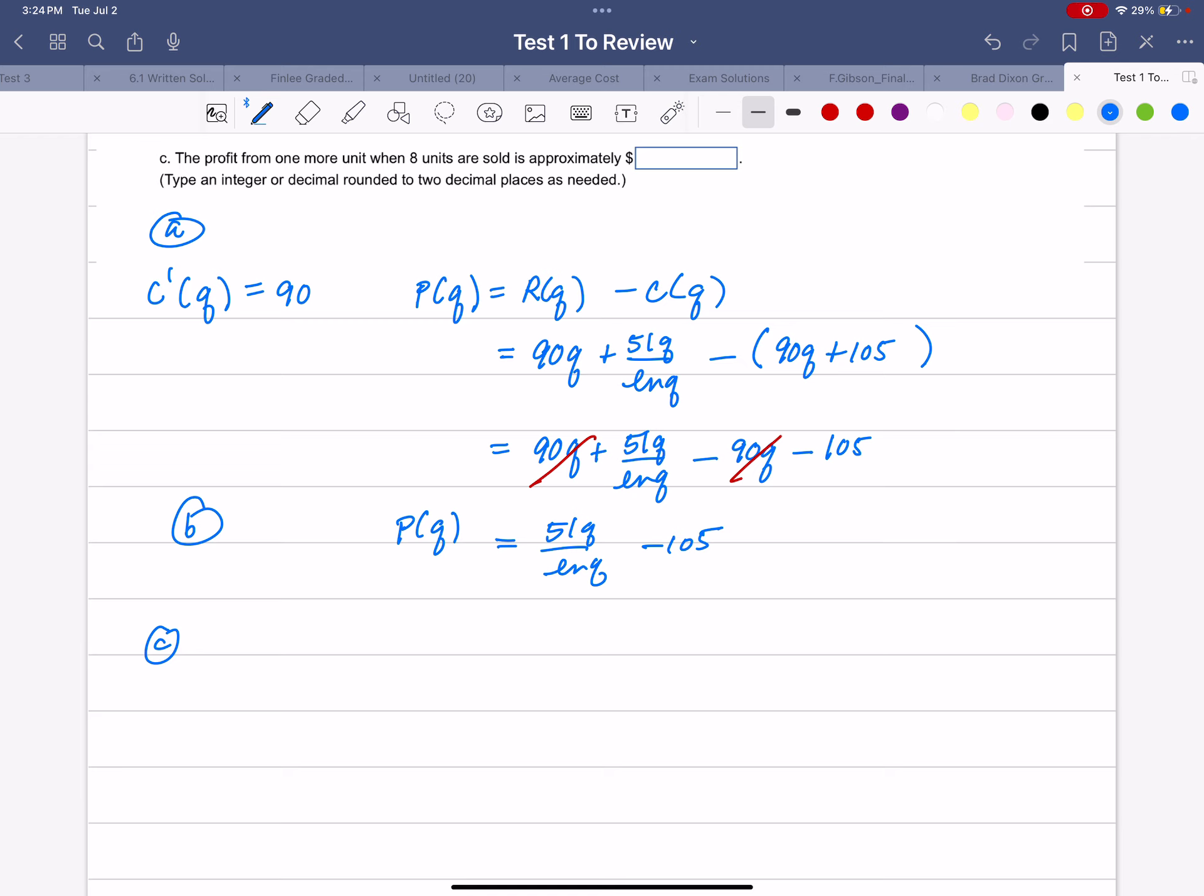With 51Q/ln(Q), the numerator is 51Q with derivative 51. The denominator is ln(Q) with derivative 1/Q. So P'(Q) is: the denominator, ln(Q), times the derivative of the numerator, 51, minus the numerator, 51Q, times the derivative of the denominator, 1/Q. That's all over ln(Q) squared.